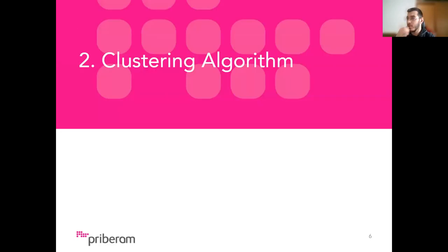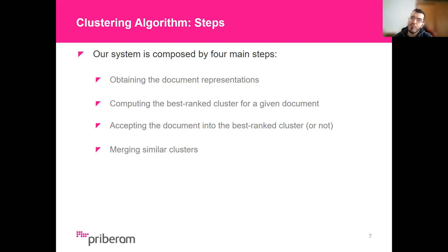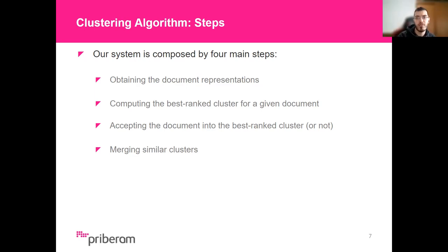Moving on to the clustering algorithm. Our main focus here was to depend as little as possible on language-specific features to process news articles for zero-shot languages without considerable loss. Our system is composed of four steps: obtaining the document representations, computing the best-ranked cluster for a given document, deciding if the document accepts the best-ranked cluster or creates a new one, and merging clusters that pertain to the same story.